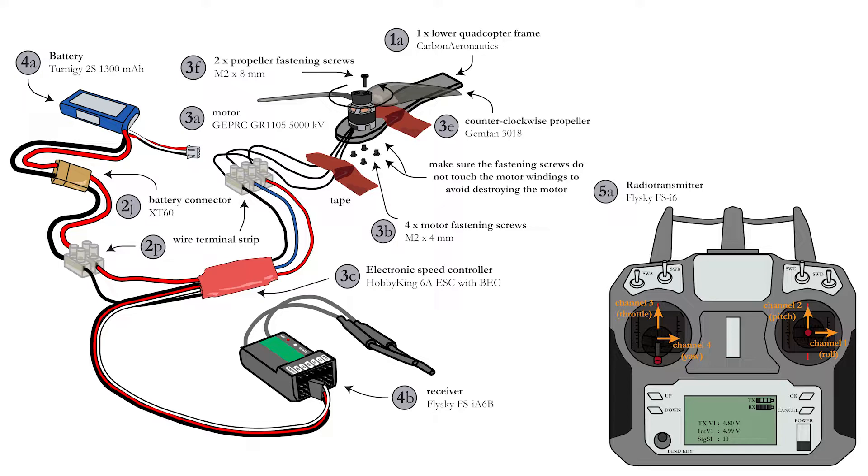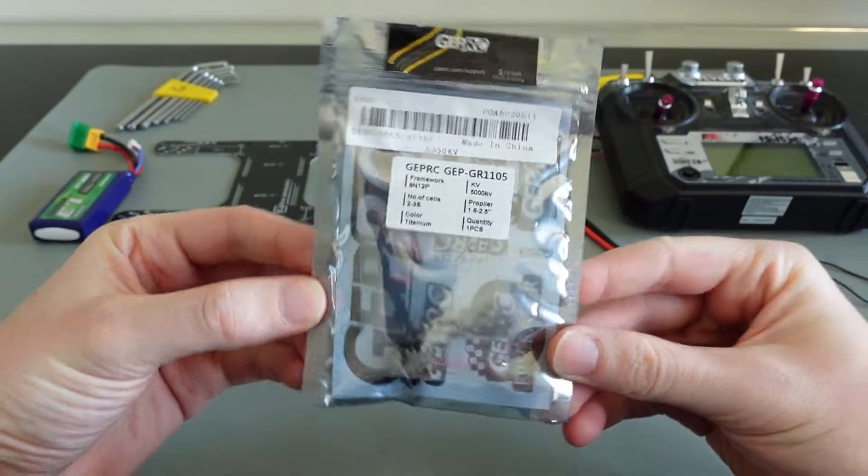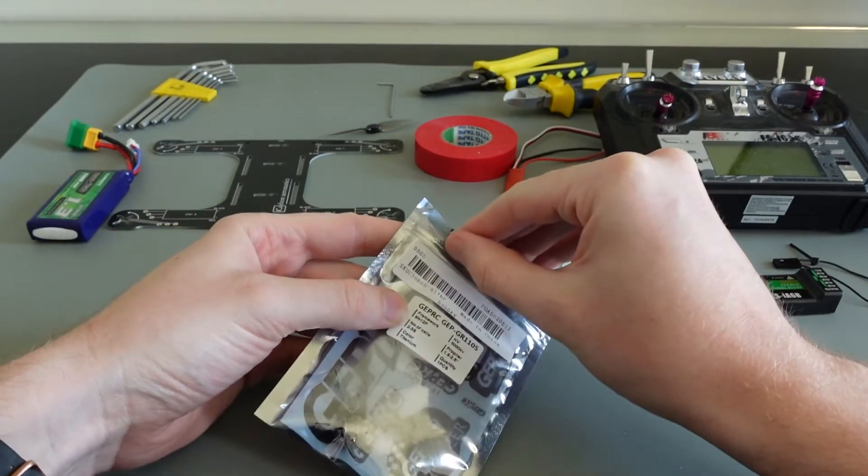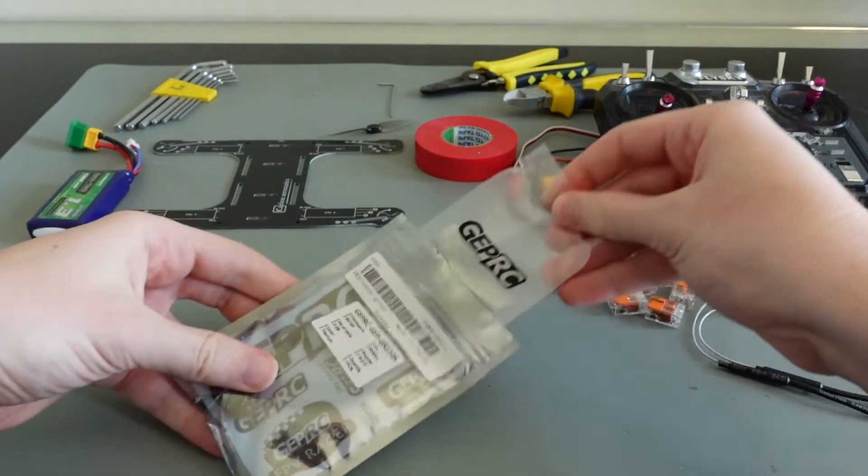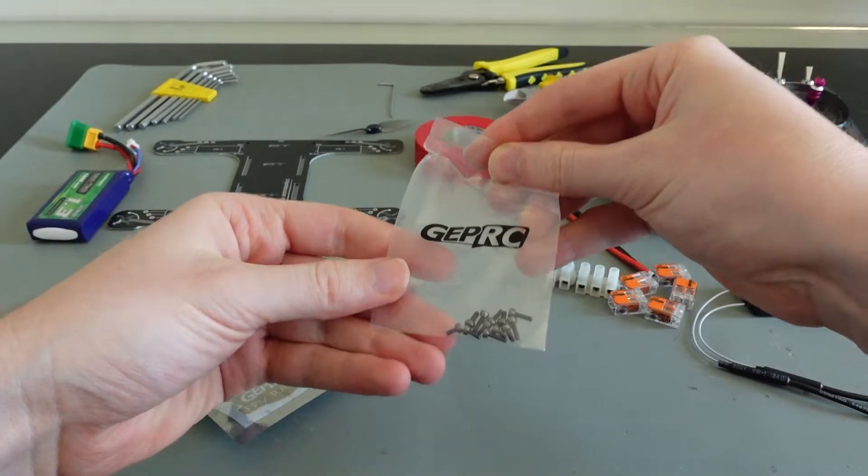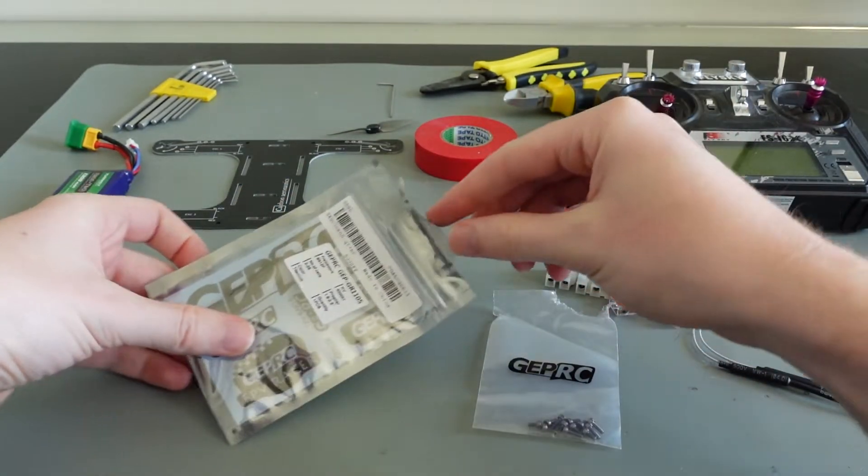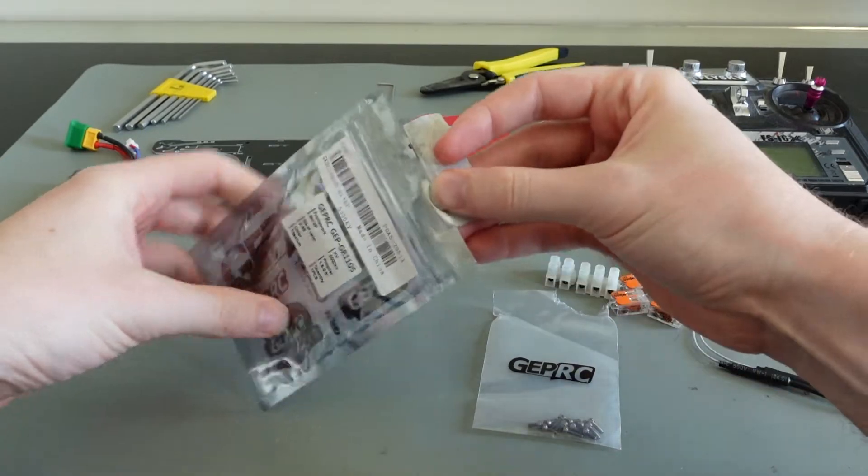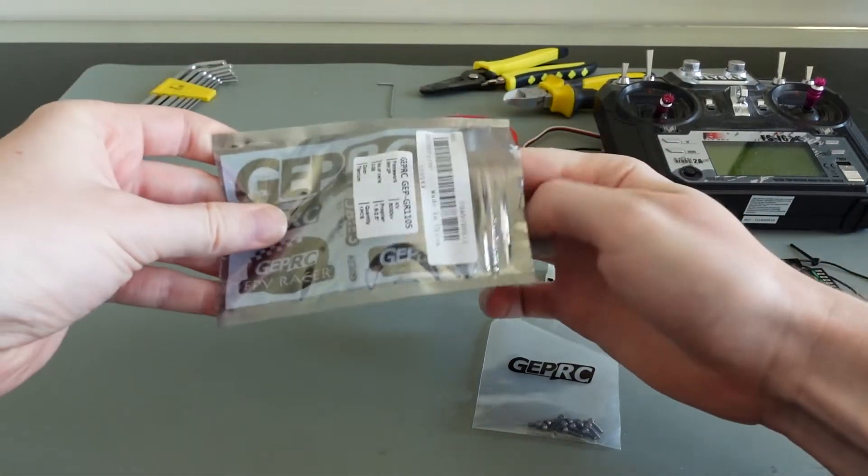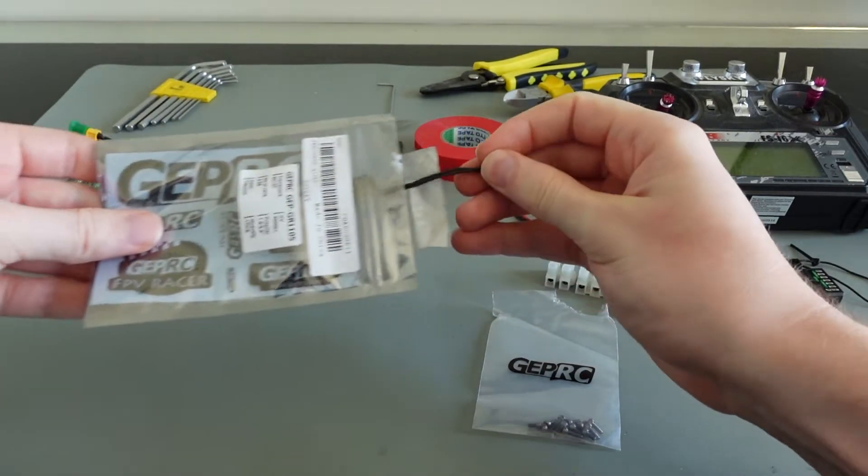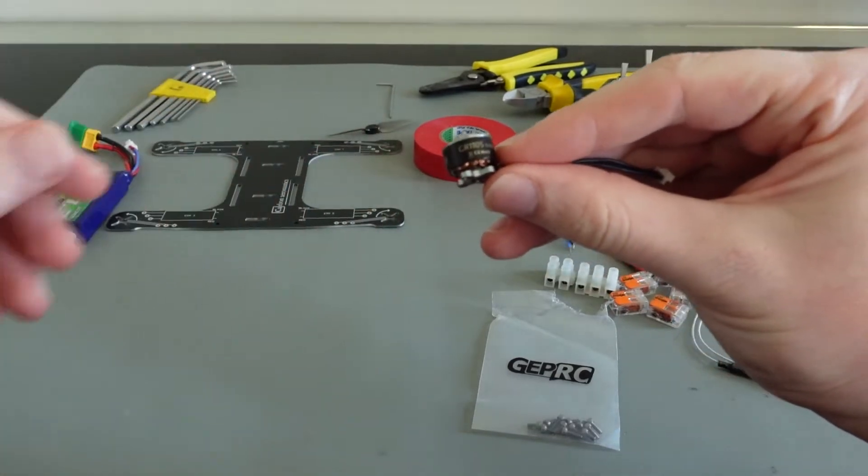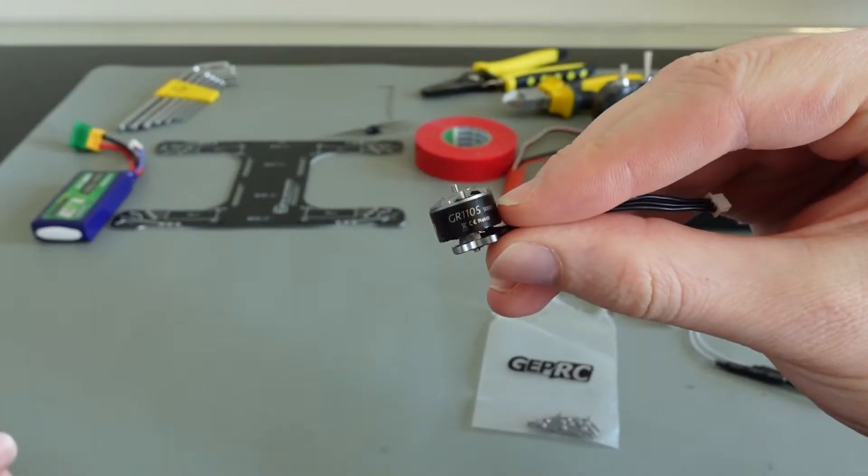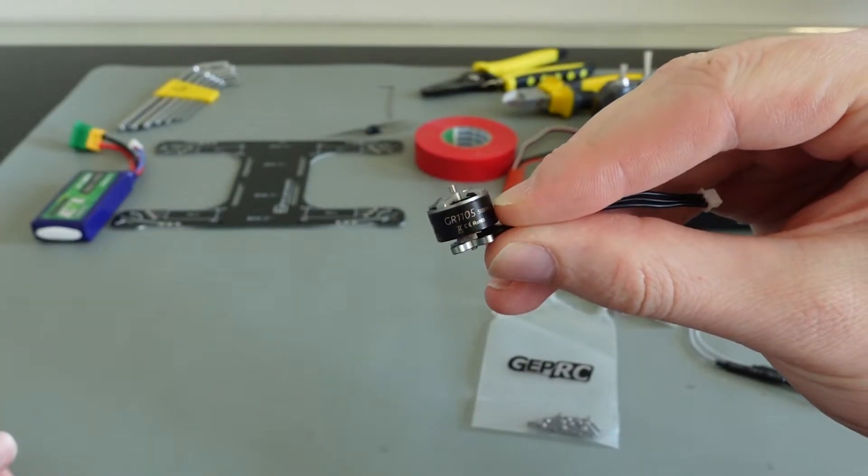Let's start by having a look at the motor you will use. A tiny brushless GEPRC motor rated at 5000 kV. This motor weighs about 6 grams. The motor comes with screws to fasten both the motor to the frame and the propeller to the motor. With the 2 cell battery and a 3 inch propeller this motor gives around 150 grams of thrust, meaning that 4 motors will easily be able to lift your quadcopter.